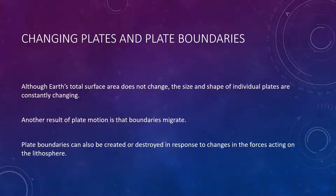Plate boundaries can also be created or destroyed in response to changes in the forces acting on the lithosphere. For example, some plates carrying continental crusts are presently moving toward one another. In the South Pacific, Australia is moving northward towards Asia. If Australia continues its northward migration, the boundaries separating it from Asia will eventually become inactive and disappear as these two plates become one. Recall that the Red Sea is the site of a relatively new spreading center that came into existence less than 20 million years ago, when the Arabian Peninsula began to break apart from Africa.